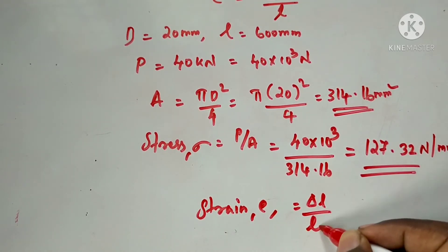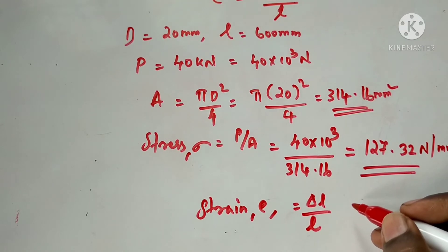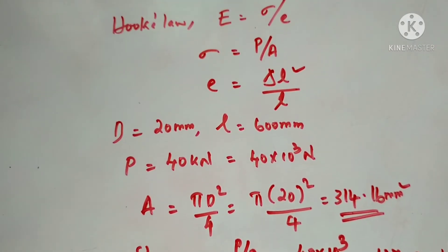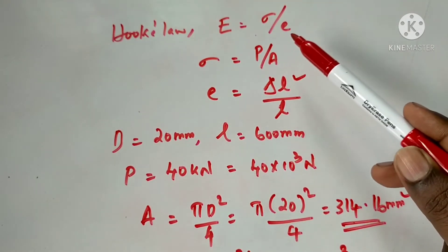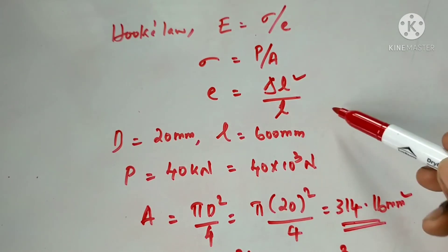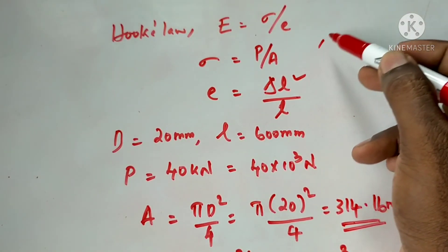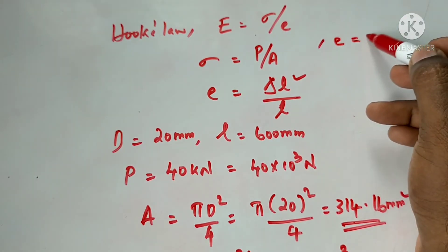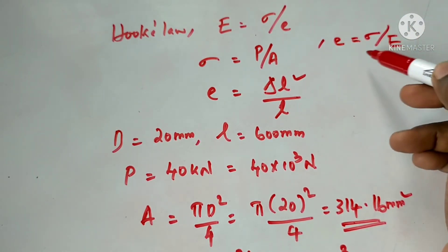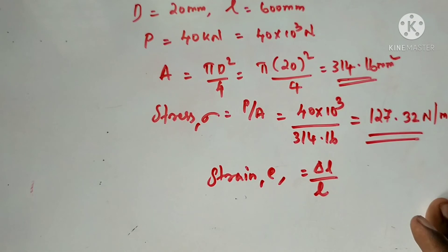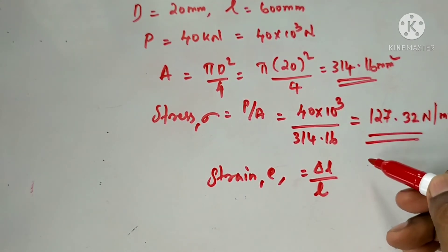Strain e equals ΔL divided by L, the original length. First of all, we use Hooke's Law: E = σ/e. Once we have our equation, e equals σ/E.